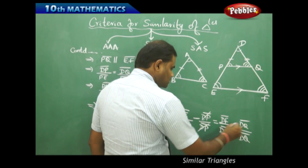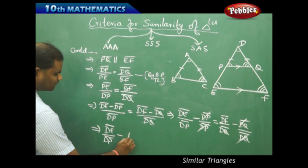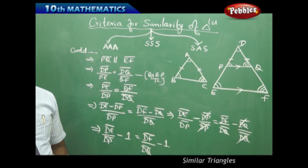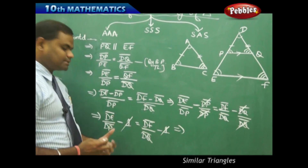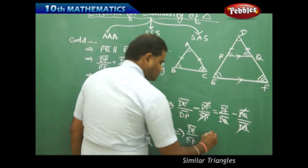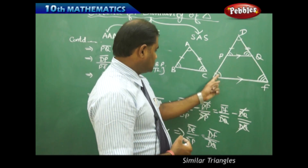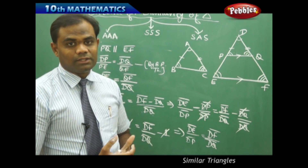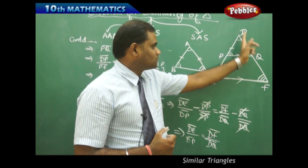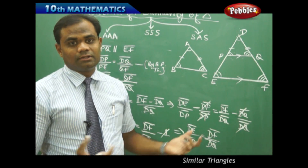Cancelling the equal terms (DP/DP = 1 and DQ/DQ = 1), we get DE/DP − 1 = DF/DQ − 1, which simplifies to DE/DP = DF/DQ. This is also consistent with the extended basic proportionality theorem, which states that when a line divides the third side parallelly, DP/DE = DQ/DF as a corollary.